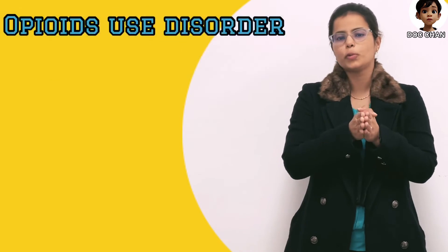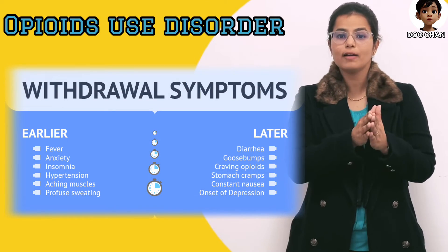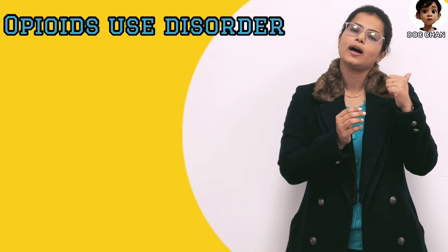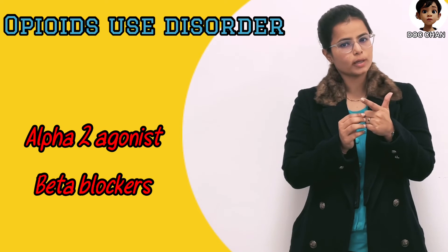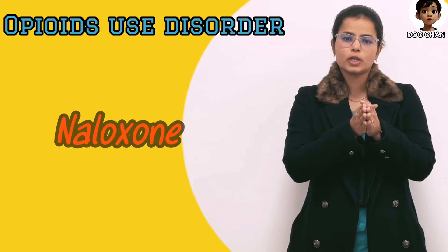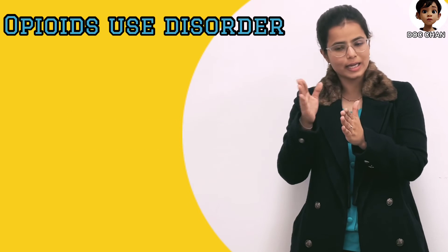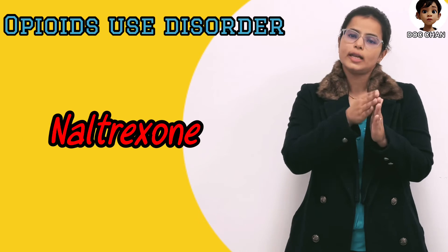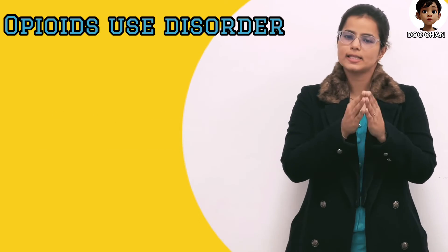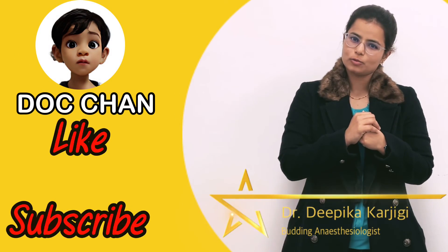The last topic is opioid use disorders. When a patient has just quit opioids, they will have withdrawal symptoms, that is increased sympathetic activity — there we will use either an alpha-2 agonist or a beta blocker. For rapid detoxification, we use a pure antagonist, that is naloxone. For long-term opioid relapse prophylaxis, we use naltrexone, while for maintenance therapy, we use the longest acting opioid available, that is methadone. So that is all about opioids — let me know how you like the video, thank you.